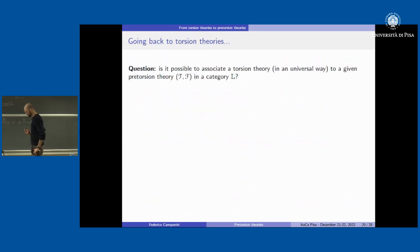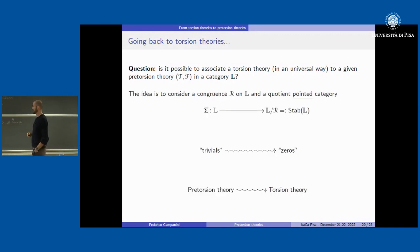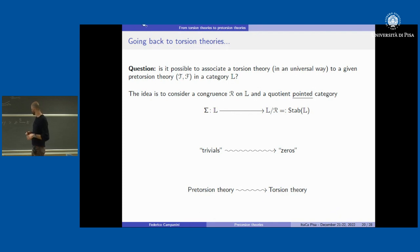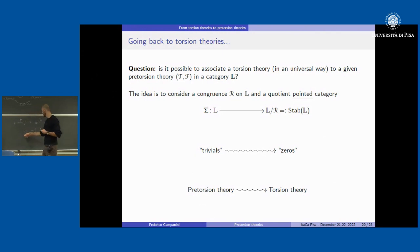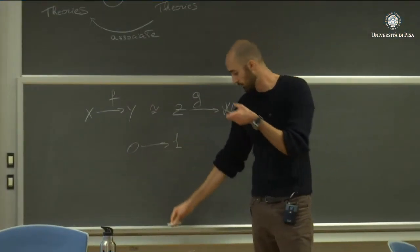Now I want to go back to torsion theories. I'm wondering if there is a way to associate to a pretorsion theory a torsion theory. The idea is to define a congruence to identify all trivial objects into the zero object, and we want this congruence and quotient to send the pretorsion theory into a torsion theory. But there is no way to define a congruence in the category to get this, because since zero is strict we have no morphisms from non-initial objects to zero.